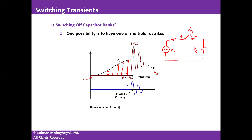When re-strike happens, the capacitor pulls the system voltage toward minus V_M and starts oscillating with a magnitude of 2·V_M. The oscillation carries the capacitor voltage from minus V_M up to 3·V_M. When the current crosses zero and the arc extinguishes, the capacitor is left with a voltage of 3·V_M.